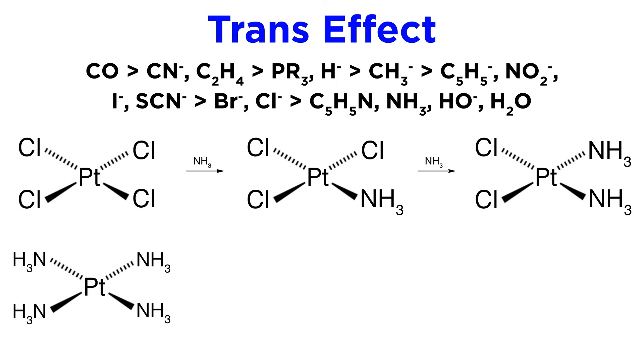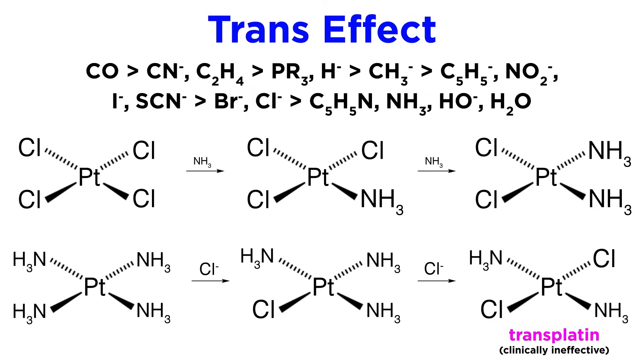To be thorough, let's take another platinum complex, this time with four ammonia ligands. If one of these is to be replaced by chloride, at first it doesn't matter which. But then, if this is to happen a second time, we must look at the trans effect. Again, chloride is higher up on the trend than ammonia, so the ligand opposite the chloride is most likely to be replaced. This results in transplatin, which is clinically ineffective.